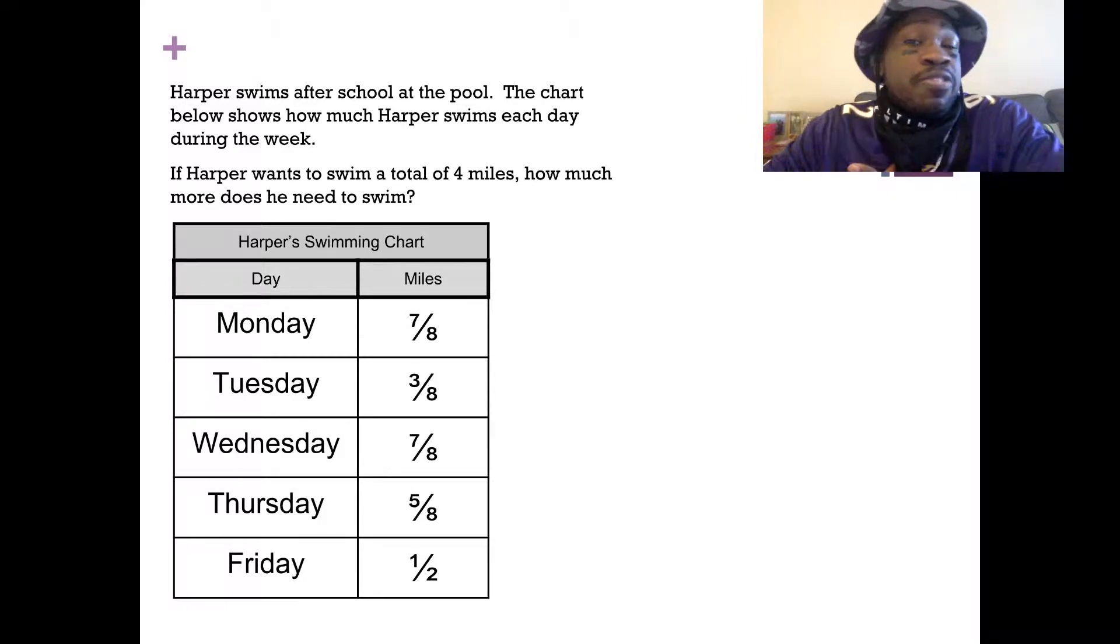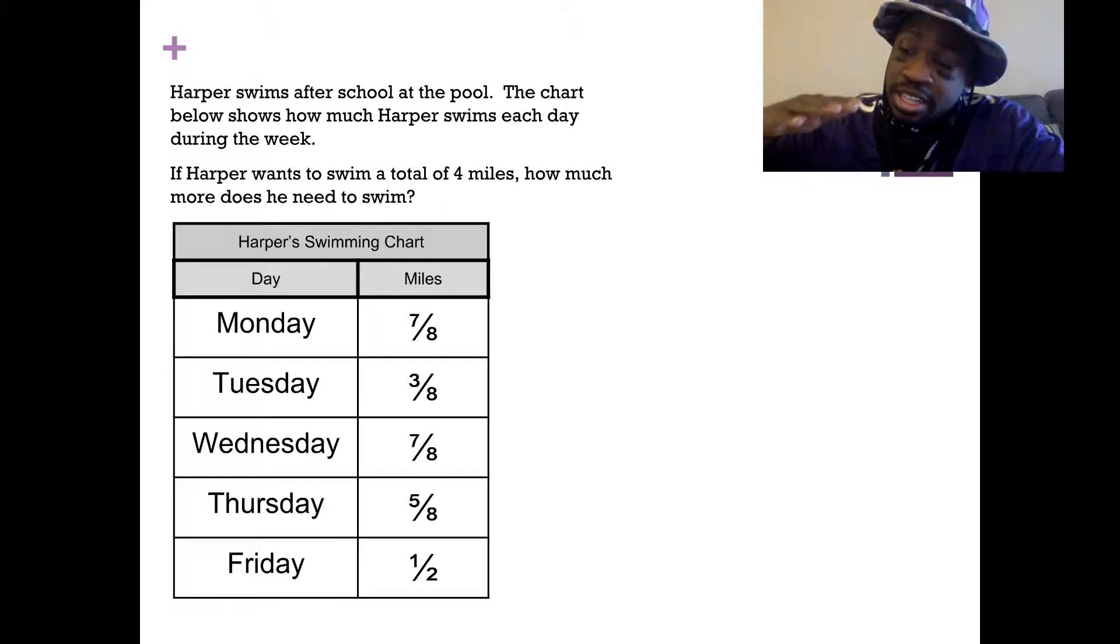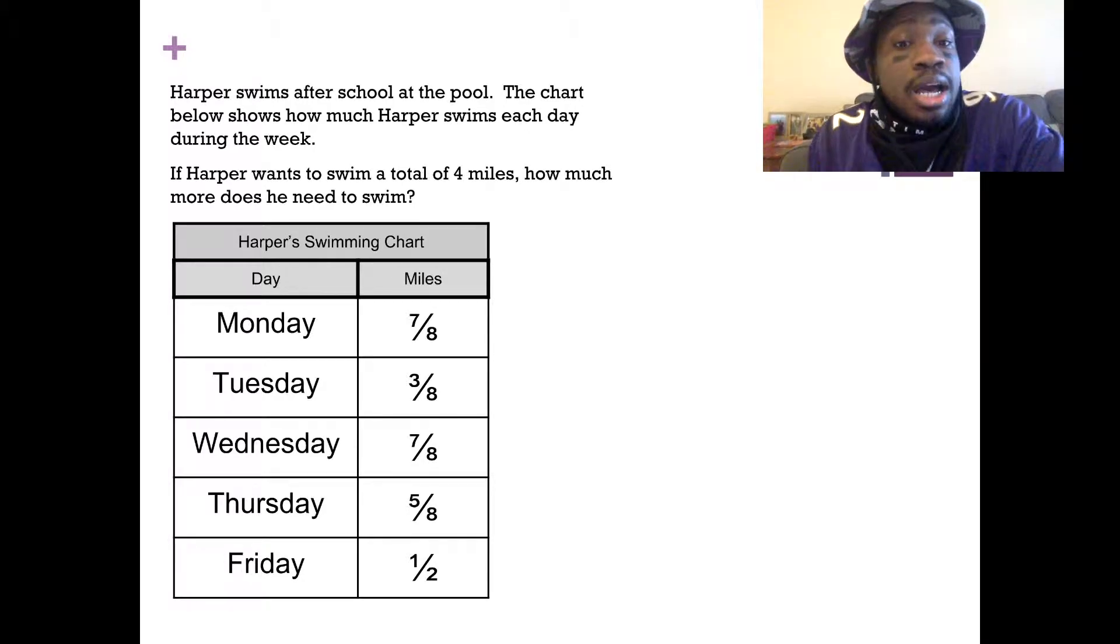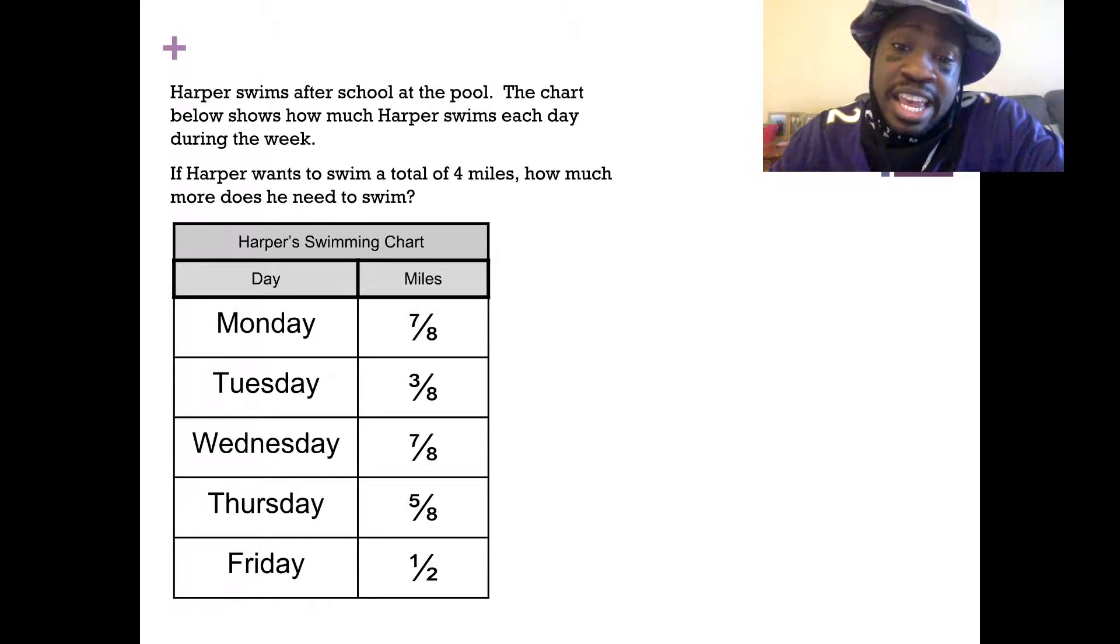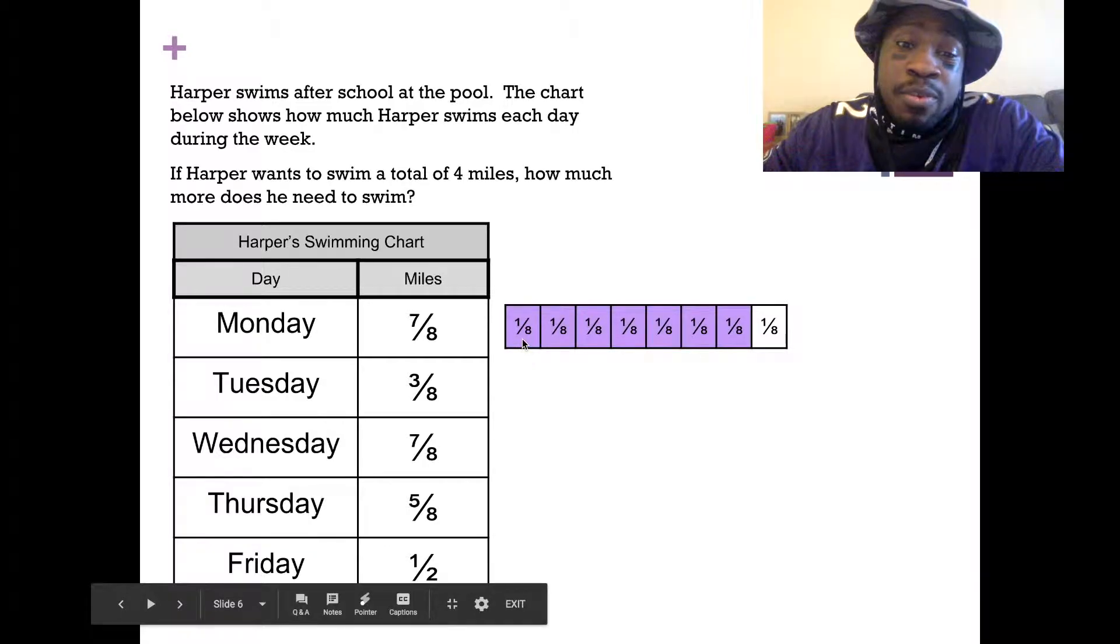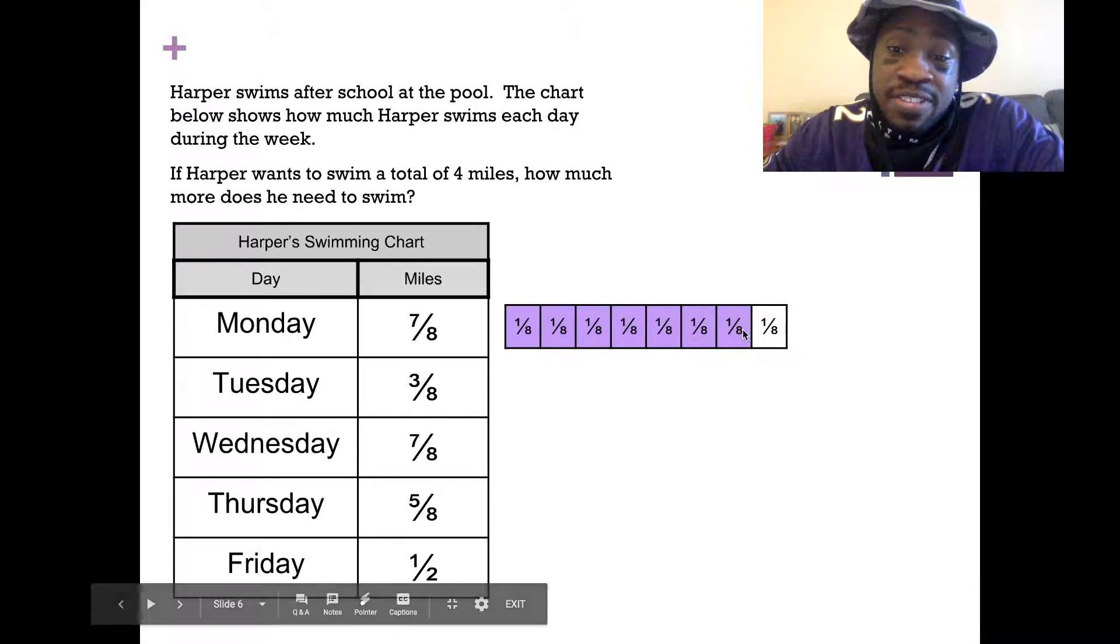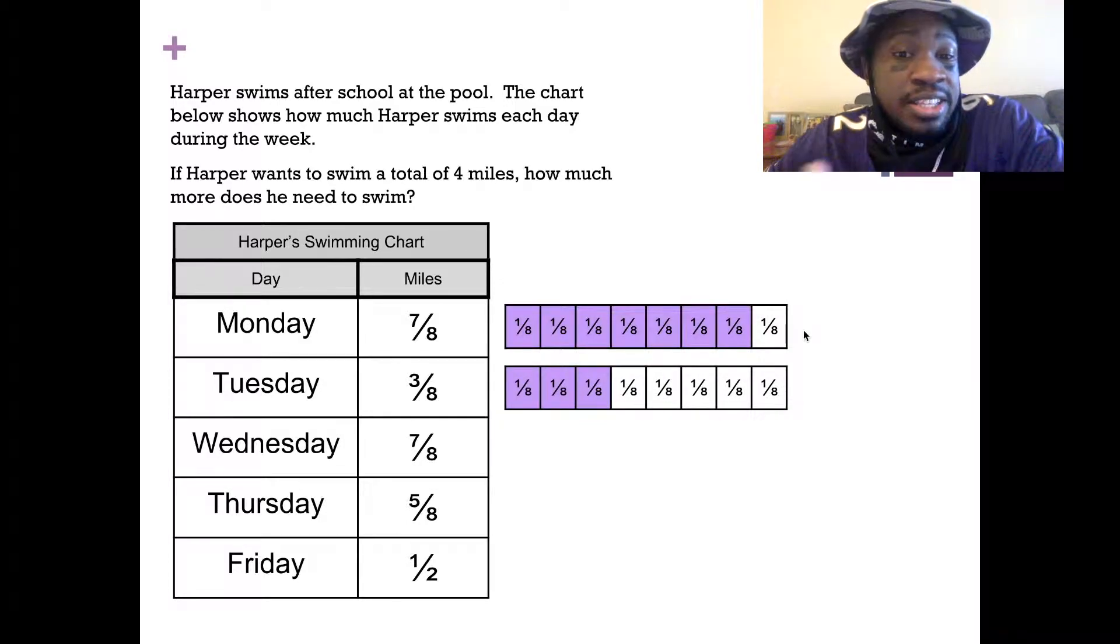I think the best way for me to see how much all this is, how much all this comes out to, how much he swam, I'm gonna want to model this. Let's model it. So again, Monday was seven-eighths and it would look like this. We have one-eighth, two-eighths, three-eighths, four-eighths, five-eighths, six-eighths, seven-eighths. This is representing how much he swam on Monday. Tuesday was three-eighths. I have three of the eighths.